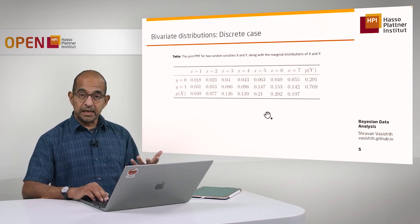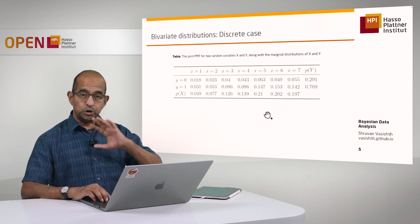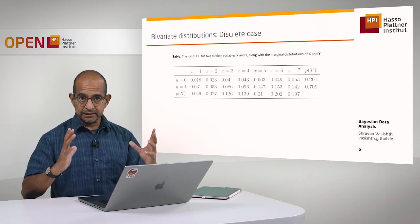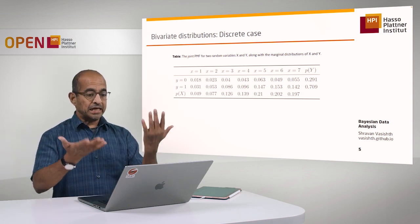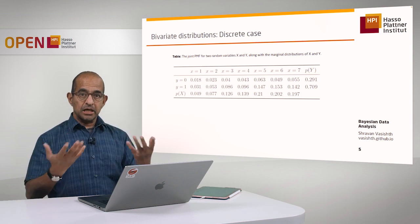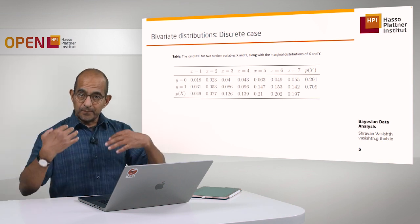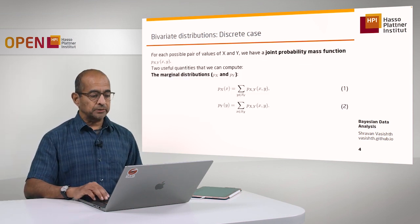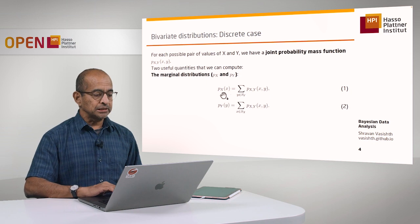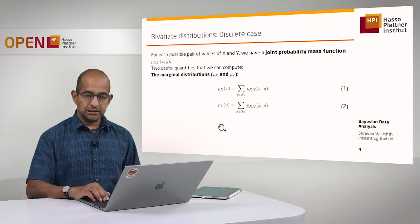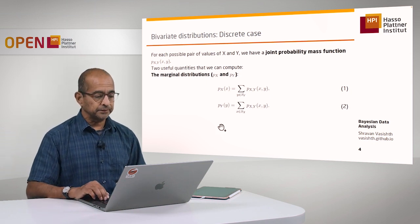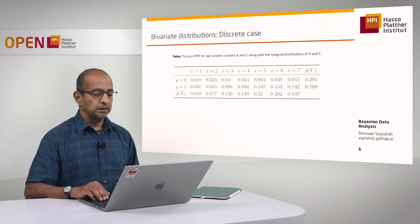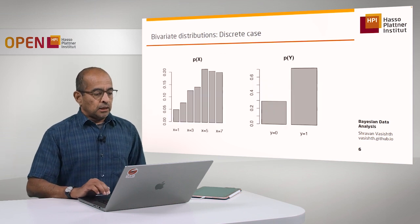What I have now done is taken the joint probability mass function for this bivariate distribution and figured out the marginal distributions of each of those two random variables using this formula. It's pretty straightforward — it's just addition, nothing more.